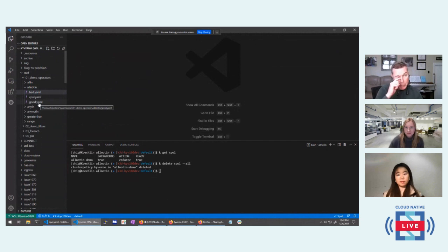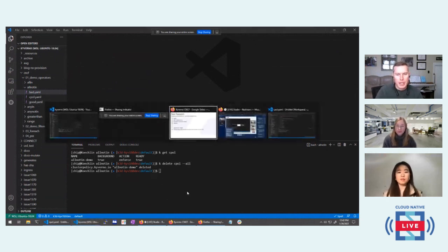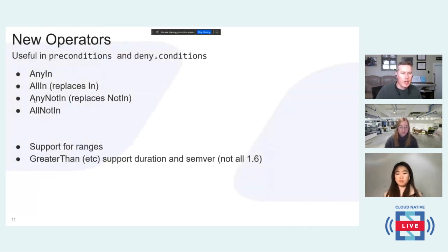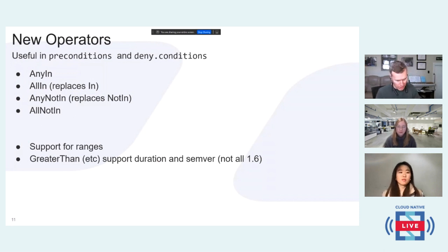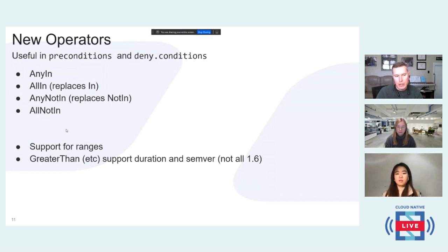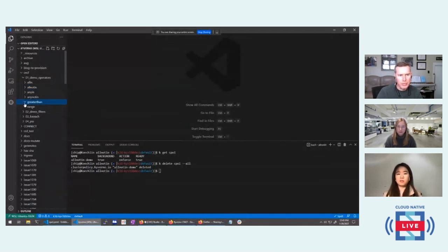I'm going to skip over a couple of these in the interest of time. The gist of the new operators is we're providing much more granularity for you to select exactly what you want when building an expression — saying either any of these things can be in, or all of these things can be in, and vice versa. They'll help unlock new possibilities for writing new types of policies or making existing policies better. We now also have support for integer ranges, and existing operators like greater than and less than now support duration and semver. A couple of these aren't exactly in 1.6 but are worth mentioning because they're super powerful.